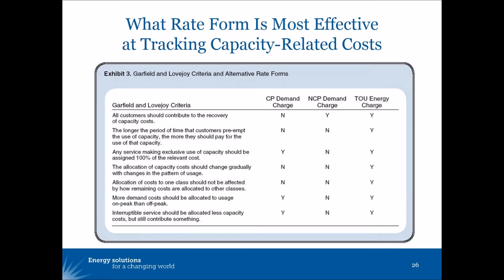Additional criteria include: the allocation of capacity costs should change gradually with changes in the pattern of usage; more demand costs should be allocated to usage on-peak than off-peak; and interruptible service should be allocated less capacity costs but still contribute something. I compared coincident peak demand charges, non-coincident peak demand charges, and TOU energy charges to see how each performed in recovering relevant capacity costs.